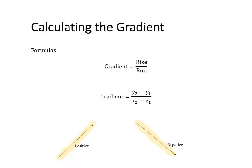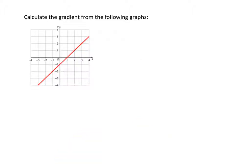So let's have a look at an example calculation to calculate the gradient of a straight line. In this example, we want to calculate the gradient of the straight line shown on the graph. The first way we're going to do this is by using the formula gradient equals rise over run, and to use this formula we need to select two points along our linear line.